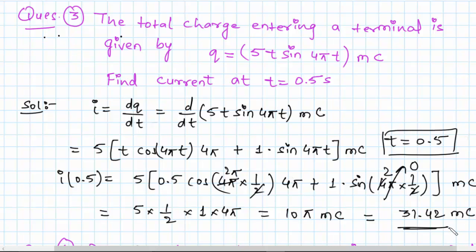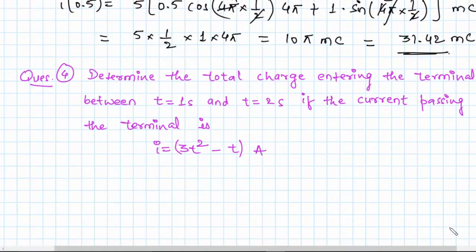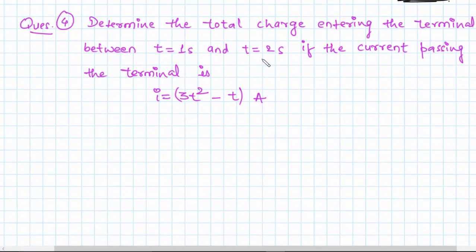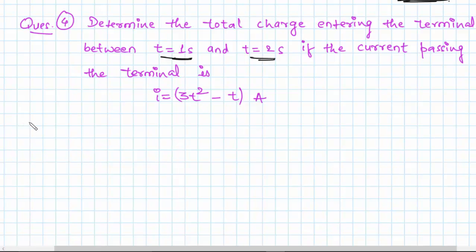Let's try to solve one more problem. We need to find the total charge entering the terminal between t equals 1 second and t equals 2 seconds, if the current passing through the terminal is given by i equals 3 times t squared minus t amperes.